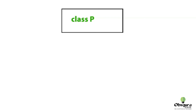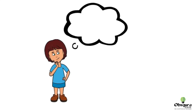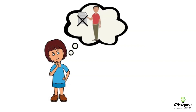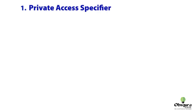Till now we discussed how an inherited child class could access the parent class constructor, methods, and variables by using the extends keyword. Now imagine, sometimes your father might wish to restrict giving access to some of his personal properties, even though he gives you a will. In Java, we could achieve the same in two ways.